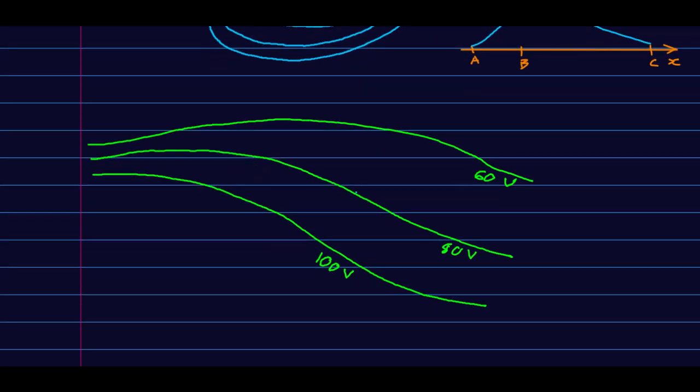We do the same thing with electric potential. We draw what are called equipotential curves. This is showing you here's a place where if you walk this way, the potential is changing slowly. And over here, here's a steep slope in the potential. If you walk a short distance here, you get a large change in potential.